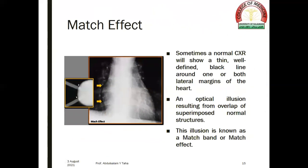A cardiothoracic ratio greater than 0.6 suggests cardiomegaly in a newborn. One of the cardiothoracic signs is called the Mach effect. Sometimes a normal chest x-ray will show a thin, well-defined black line around one or both lateral margins of the heart — an optical illusion resulting from overlap of superimposed normal structures. The illusion is known as a Mach band or Mach effect, like in this chest radiograph.